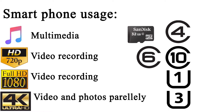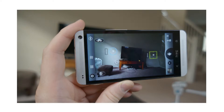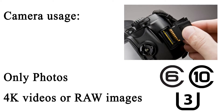If you choose a Class 6, Class 10, or UHS-1 card for 4K recording when UHS-3 is needed, you can experience frame drops. So choose the right speed card for your phone. If you use a DSLR camera or a point-and-shoot camera, you can use a Class 6 memory card minimum. For 4K videos on a DSLR, you should focus on UHS-3 cards.